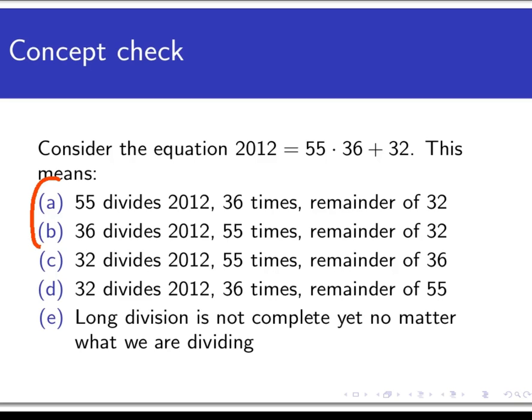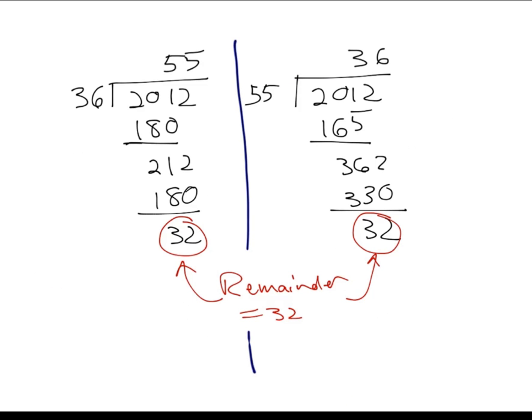So the answer here is both A and B. When we look at the equation 2012 equals 55 times 36 plus 32, we can pick off the divisor as one of the two things being multiplied, the quotient as the other, and the remainder is the stuff left over that's being added back in. So this could be taken in one of two ways. Either 55 is the divisor and 36 is the quotient, or vice versa. But either way you go, the remainder is 32. Just to check this, here's the long division process fully worked out for both cases.